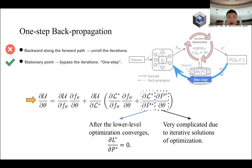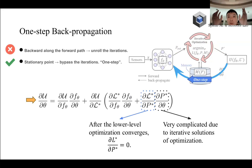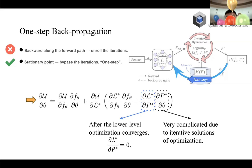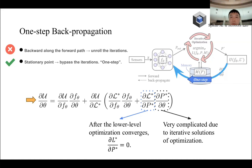So what we did is: if we assume that the back end always converges — meaning it reaches either a local or global minimum — the gradient is always zero, which means this item will be zero. This results in a one-step back-propagation operation. In other words, we use the stationary points of the bi-level optimization to bypass the very complicated iterative optimization for the back-propagation operation.